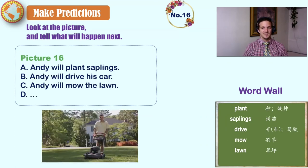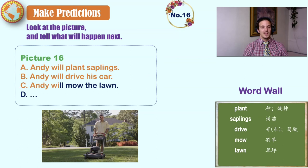Sixteen. Plant, saplings, drive, mow, lawn. Andy will plant saplings. Andy will drive his car. Andy will mow the lawn. What do you think?